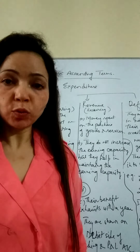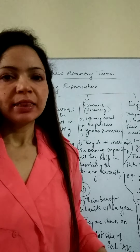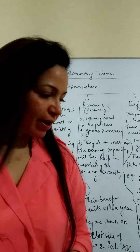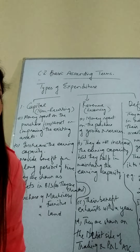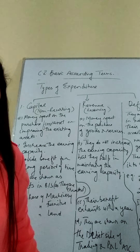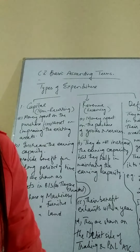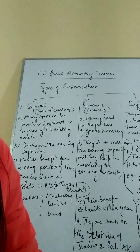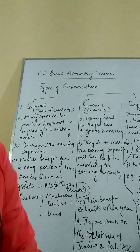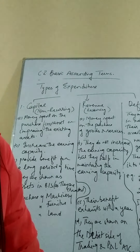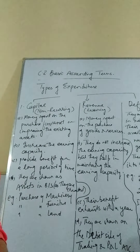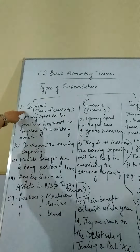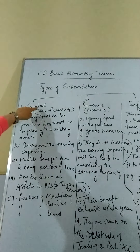Welcome to session two. Today we will be talking about types of expenditure. Primarily I'm taking up three types of expenditure, but prior to that let us understand what expenditure is. Expenditure is money spent by the business firm in order to purchase goods and services, or to purchase an asset, or any other expense. Primarily we have three categories of expenditure.